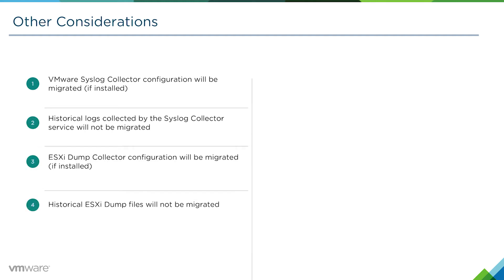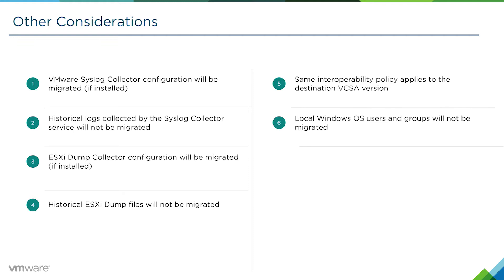If you have VMware Syslog Collector installed on the Windows vCenter server that you're planning on migrating, that configuration will be migrated, but the historical logging information will remain on the source vCenter server. It won't be migrated to the vCenter server appliance.